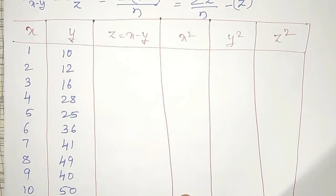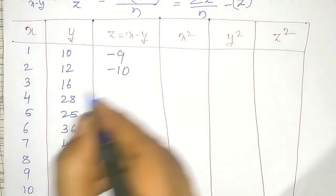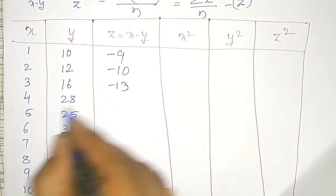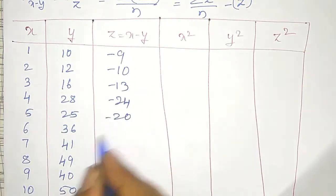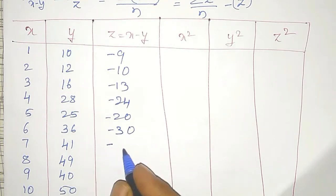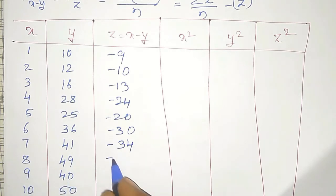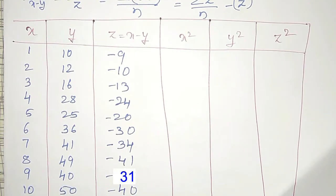The z values (x minus y) are: −9, −10, −13, −24, −20, −30, −34, −41, −39, and −40. These are my z values.